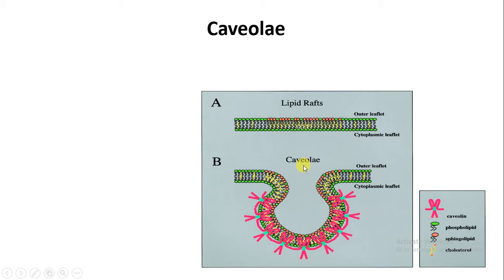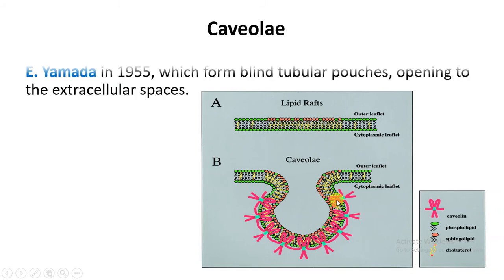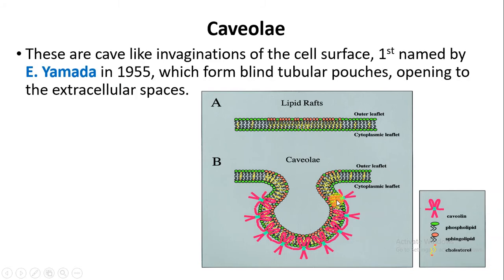In many vertebrates, these types of caveolae are present in the endothelial cells, in adipocyte cells, and also in the embryonic notochord cells. They were discovered by the scientist A. Yamada in 1955.